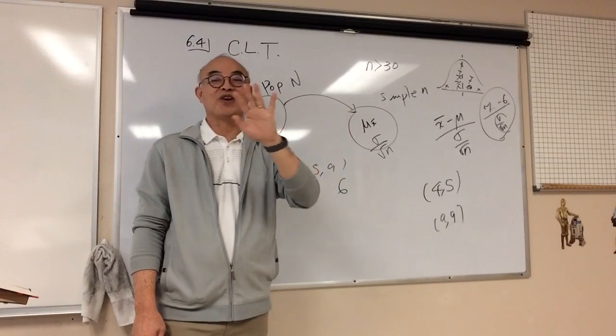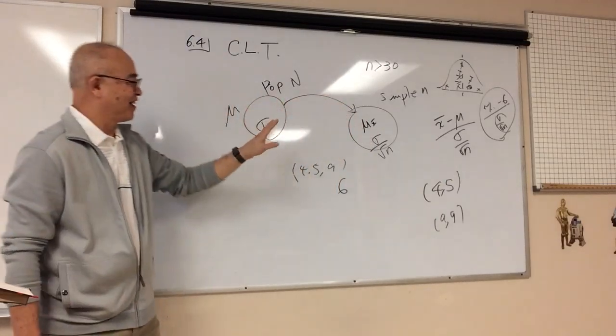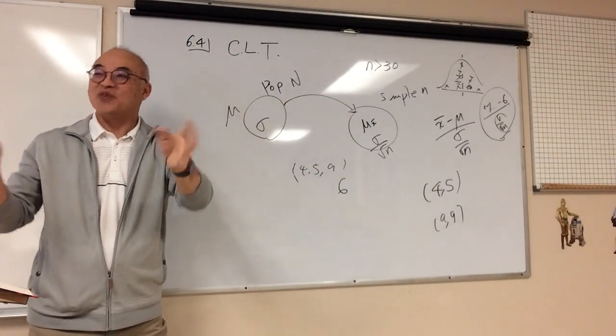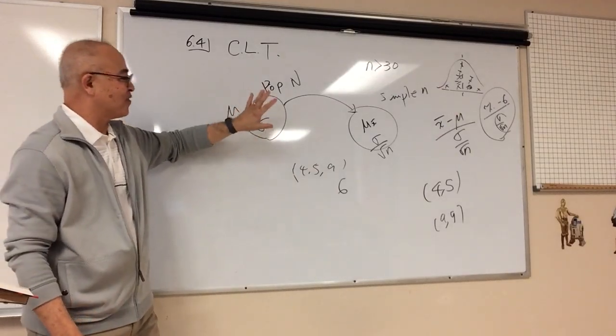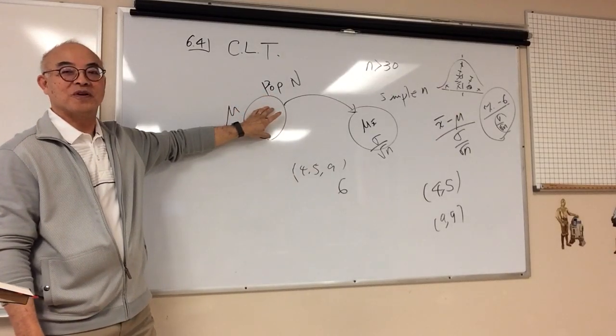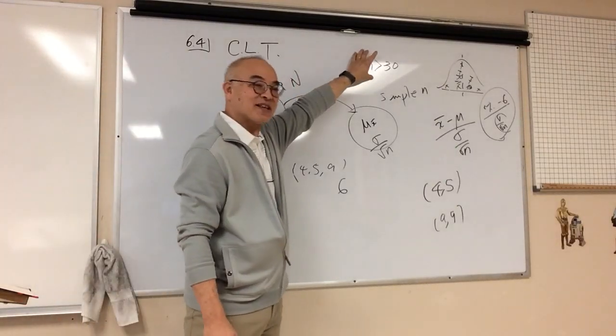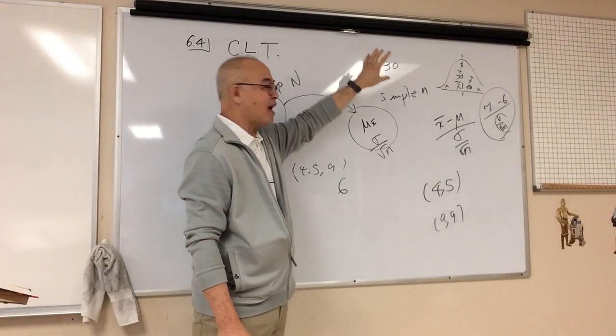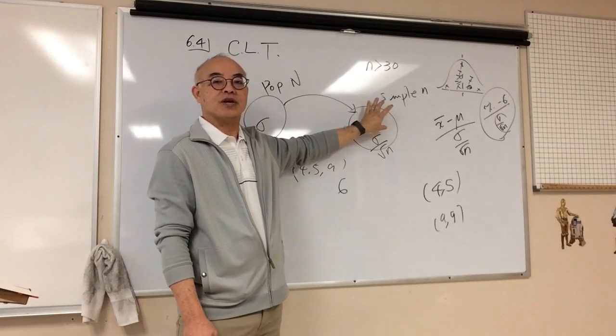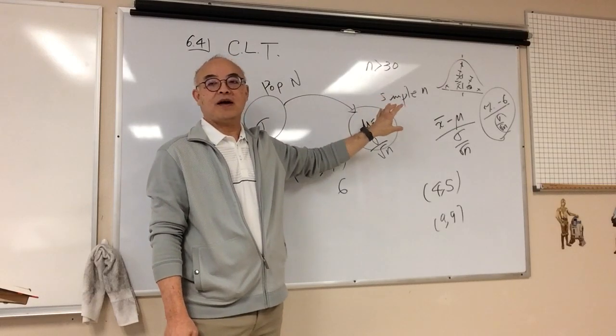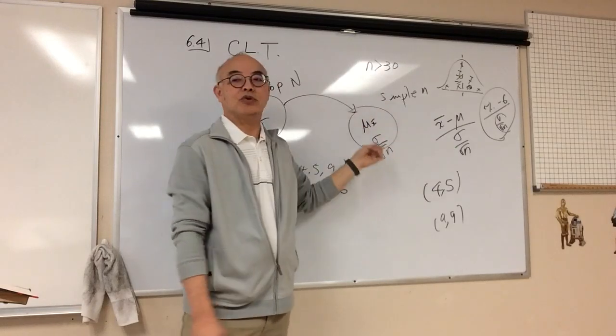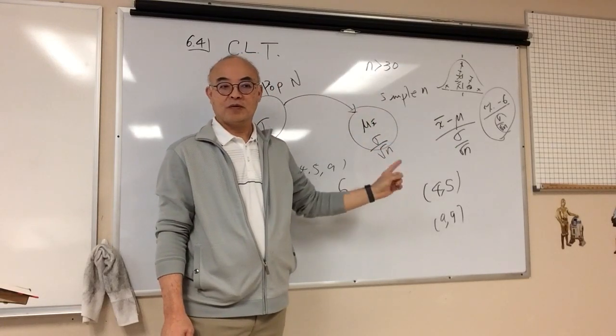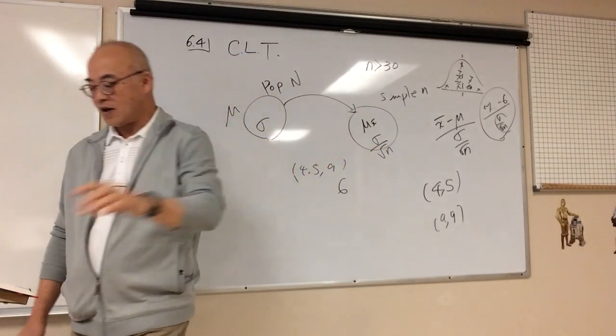If we do not know what the population distribution is, and we are less than 30, then we are required to do a dot plot, stem and leaf plot, something that shows me the distribution of this guy. And then I'm going to look for severe skewedness or outliers. If I don't have any one of those two, I'm calling this normal. So, the only way that it's not normal is if this is not normal, and I am less than 30, and I found severe skewedness or an outlier. Other than that, this is always going to be normal.